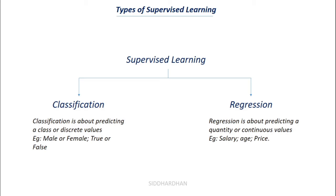In regression, we try to predict a continuous value — for example, salary, age, or price. Say we need to predict a person's salary from their work experience; the salary will be a continuous number. Classification predicts a class, like apples or mangoes, whereas regression finds a specific number. Let's look at examples to understand each type more clearly.